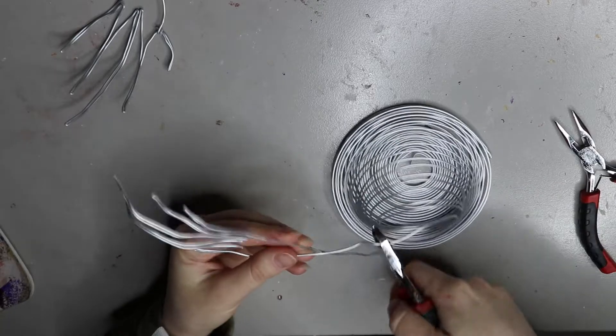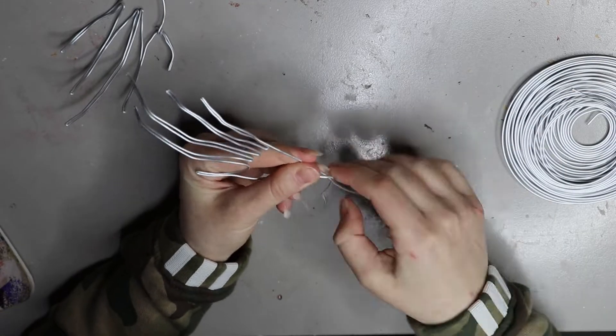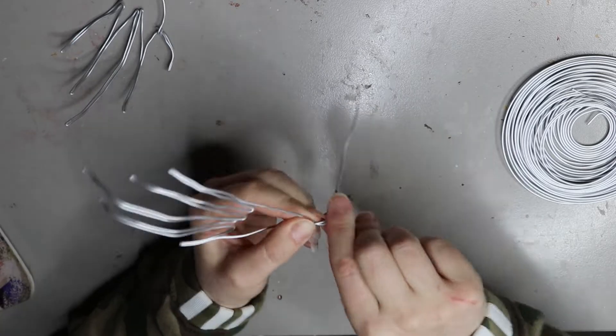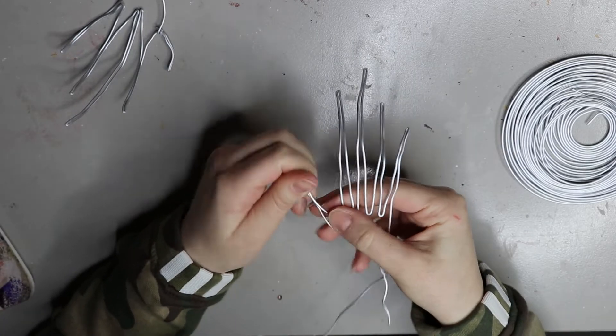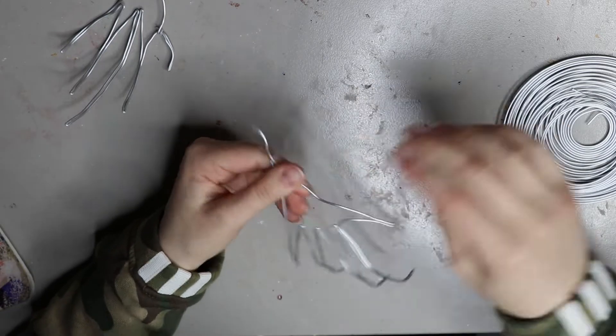Once that's done and I'm happy with it, I just cut off the wire from the actual reel and then twist the wire over on itself to seal off the end, and just do some finer little touches to make sure I'm happy with the proportions.